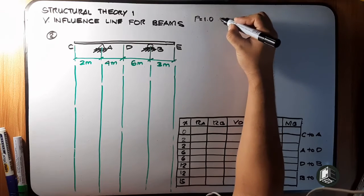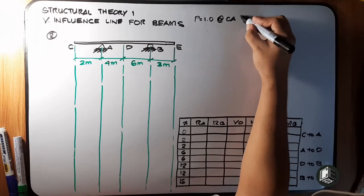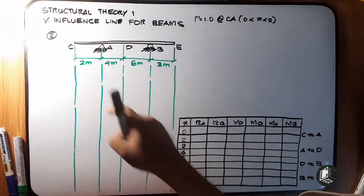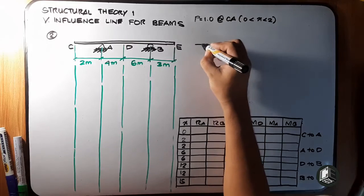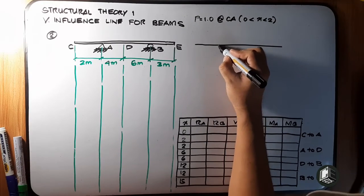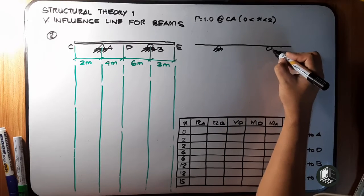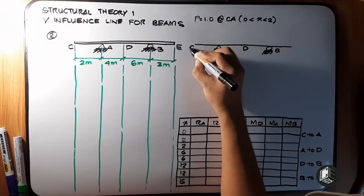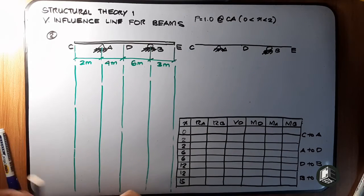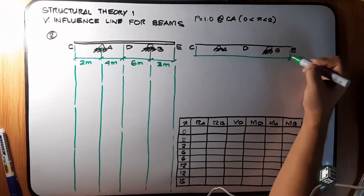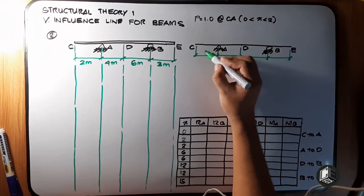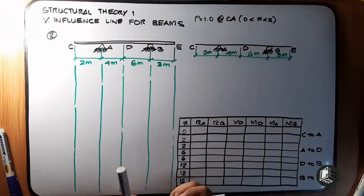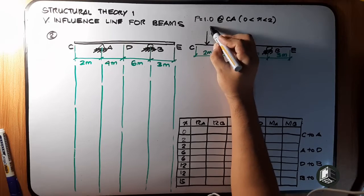When unit load P = 1.0 arrives at segment C to A, our X is greater than 0 but less than 2 meters. This is our point A, this is B, this is D, this is C, and this is E. The dimensions are: 2 meters, 2 meters, 4 meters, 6 meters, and 3 meters and 3 meters. The 1.0 unit load is placed here.